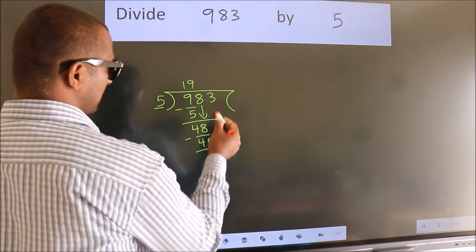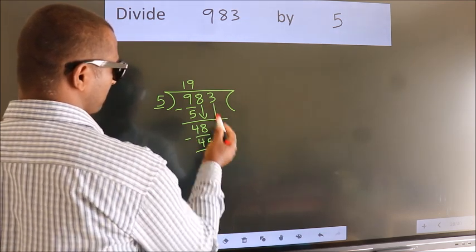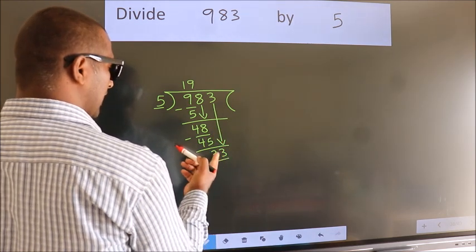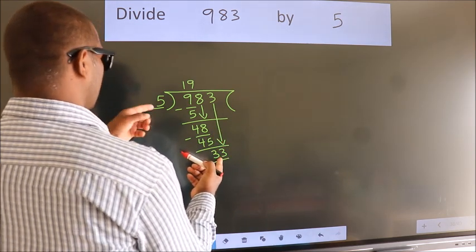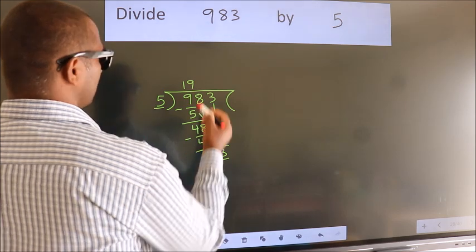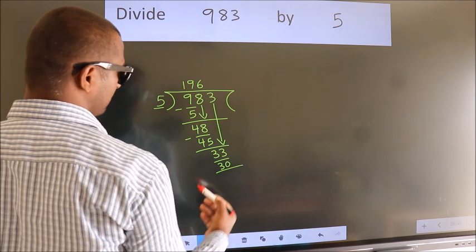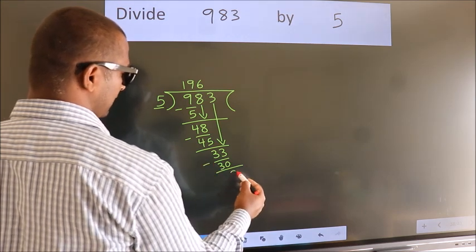After this, bring down the next number, so 3 comes down. So 33. A number close to 33 in the 5 table is 5 sixes, which is 30. Now we subtract and get 3.